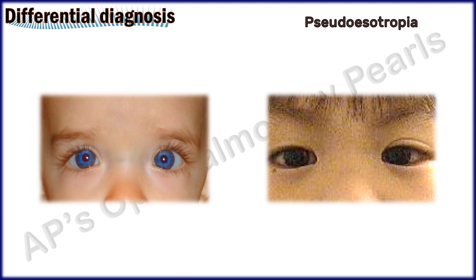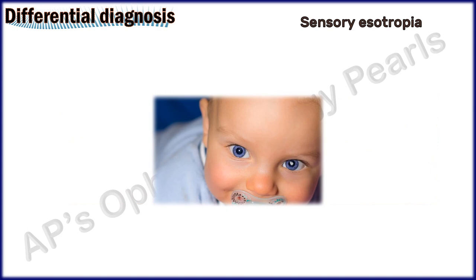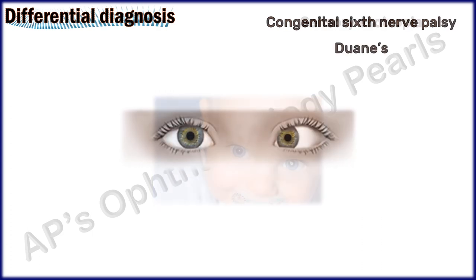Coming to the differential diagnosis, pseudo esotropia can occur due to a wide nasal bridge, prominent epicanthal folds, small interpupillary distance, and negative angle kappa — all of which can be ruled out by examination. Sensory esotropia will present with poor vision in one eye and examination will show the cause.